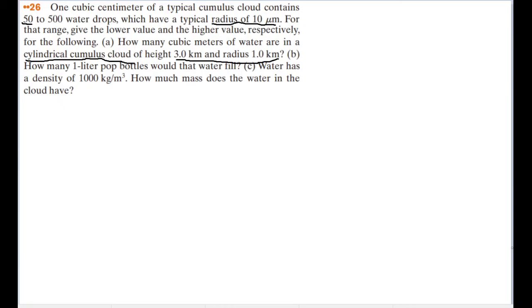One cubic centimeter of a typical cumulus cloud contains 50 to 500 water drops, which have a typical radius of 10 microns. For that range, give the lower value and the higher value respectively for Part A: how many cubic centimeters of water are in a cylindrical cumulus cloud of height 3 kilometers and radius 1 kilometer? We'll focus on part A for now.